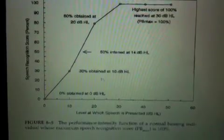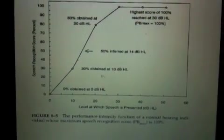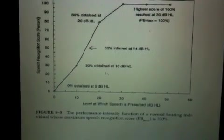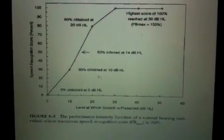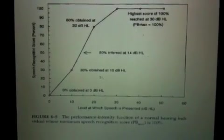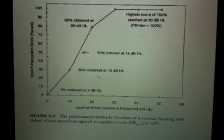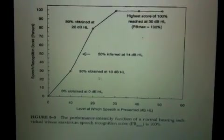Now in standard audiometrics, the word recognition scores may be obtained at just one level. For instance, we may present the signals at 30 dB SL, 40 dB SL, relative to the pure tone average. So if an individual's pure tone average is 20 dB HL, we may present the test stimuli, the words, at 60 dB hearing level.